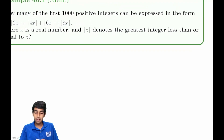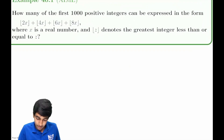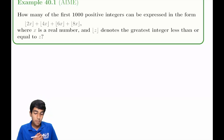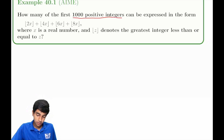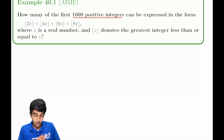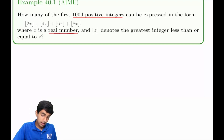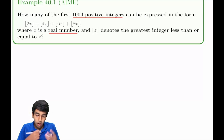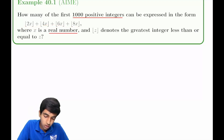Now let's look at some examples, because this can get very tricky. The first problem asks: how many of the first 1,000 positive integers can be expressed as floor(2x) + floor(4x) + floor(6x) + floor(8x)? The key thing to notice is that x is not necessarily an integer — it can be any real number. We're looking for positive integer values of this expression.